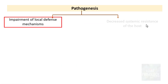Pulmonary congestion and edema can also lead to impairment of local defense mechanisms. Whenever there is impairment of local defense mechanisms or decreased systemic resistance of the host, there can be entry of pathogens into the lung parenchyma, causing disease.